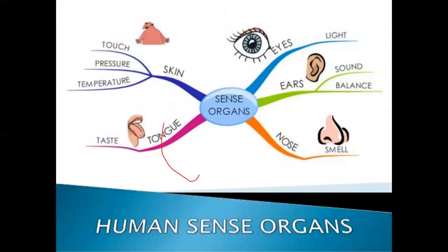How many sense organs are there? There are five sense organs and we have five senses. Number one: eyes, which are used to focus light and form images of different things. Ears, which are used to hear sound, and a very important function of ears is also to balance the body. Number three: nose, the sense organ for smell.